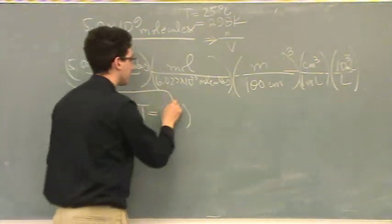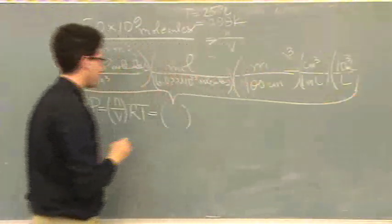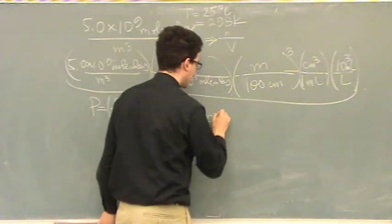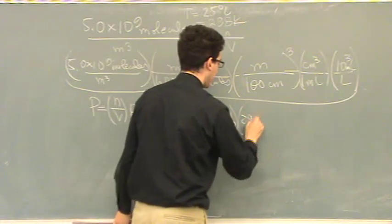that's that mess. R, same R as before, 0.08206, T is 298.